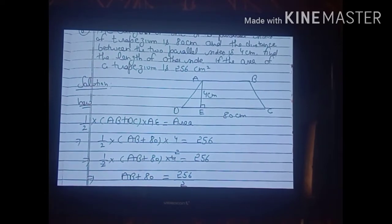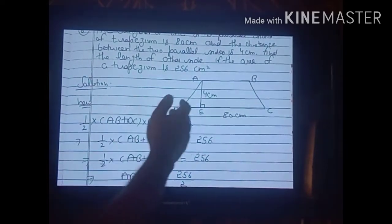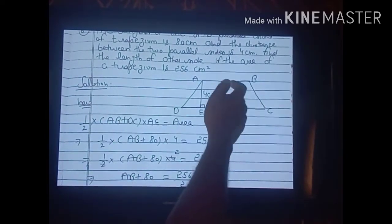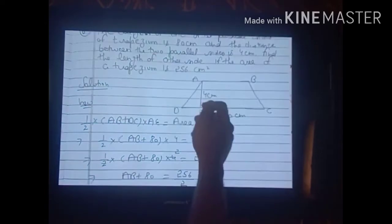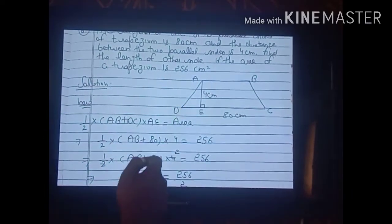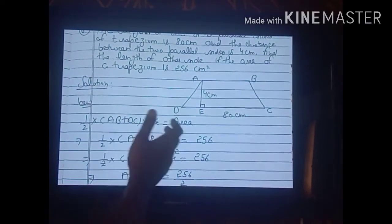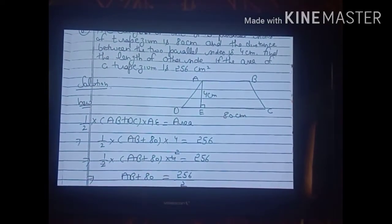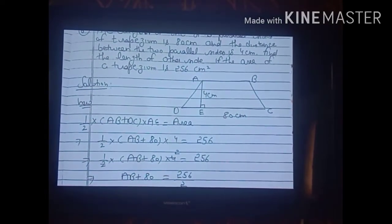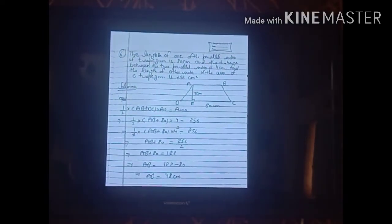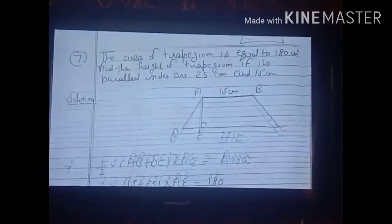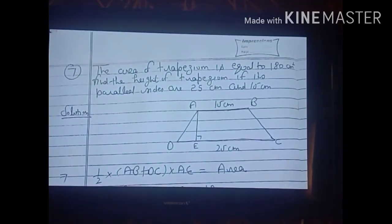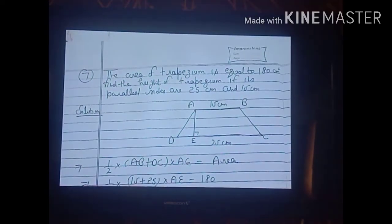In this sum, one parallel side, the height, and the area were given, and using the trapezium formula we found the value of the other parallel side AB = 48 cm.